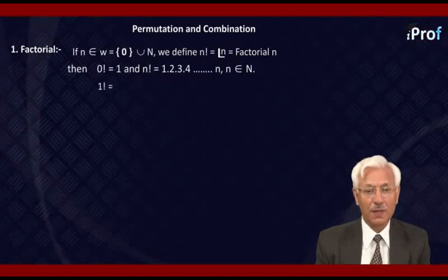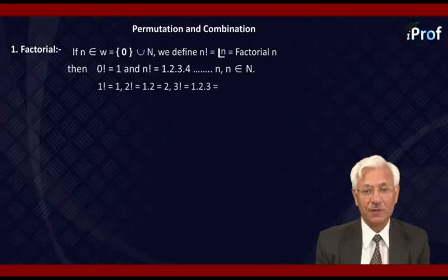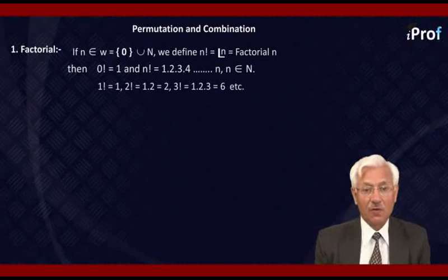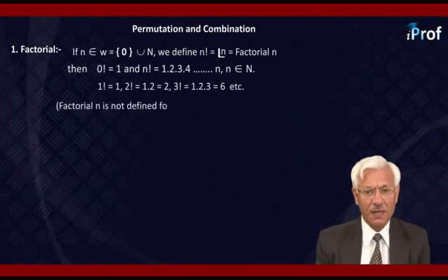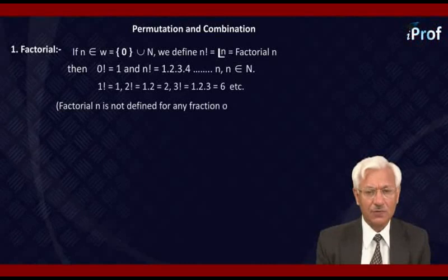Thus, 1 factorial equals 1. 2 factorial will be 1 into 2, that is 2. 3 factorial is equal to 1 into 2 into 3, that is 6, etc. Factorial n is not defined for any negative numbers or any fractional number.